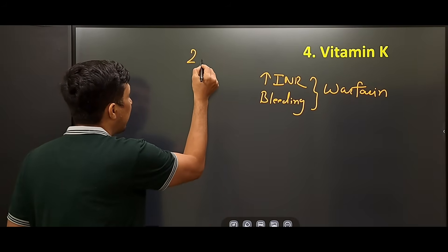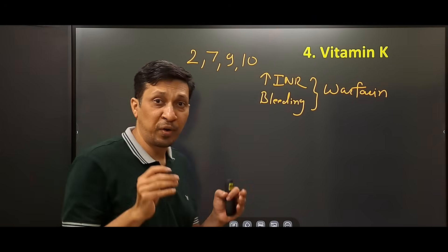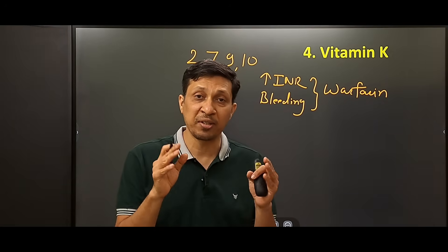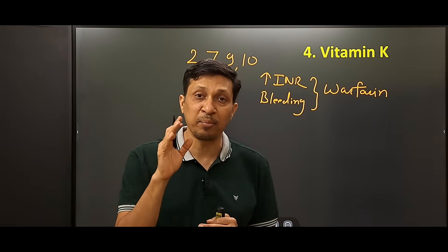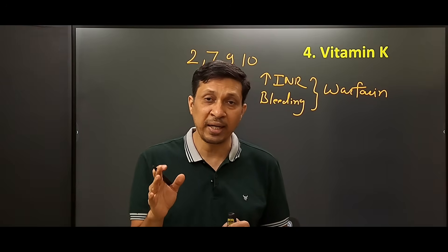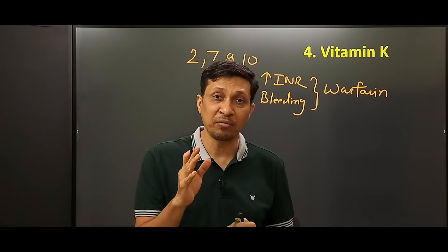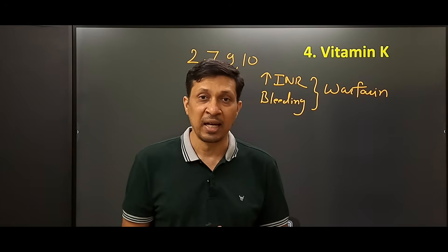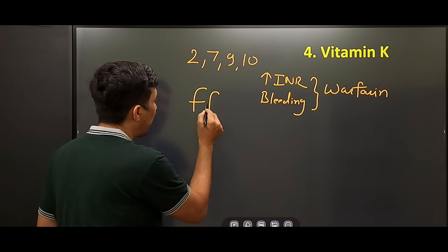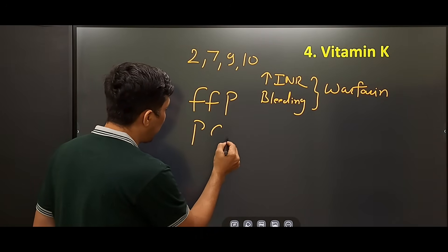Warfarin acts by inhibiting the Vitamin K-dependent coagulation factors 2, 7, 9, and 10. When we give Vitamin K, this mechanism is bypassed, coagulation factors are restored, and bleeding is controlled. When there is only increased INR with no bleeding, Vitamin K can be given orally. If there is bleeding, it must be given intravenously. For serious bleeding, fresh frozen plasma or prothrombin complex concentrate may be needed.